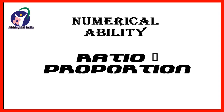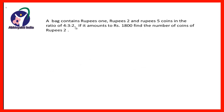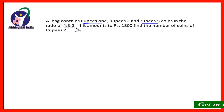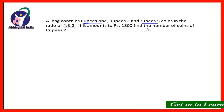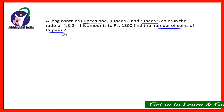Friends, here is the first question on the screen: a bag contains 1 rupee, 2 rupees and 5 rupees coins in the ratio 4:3:2. If it amounts to rupees 1800, find the number of coins of rupees 2.